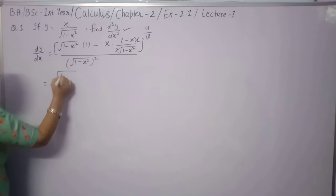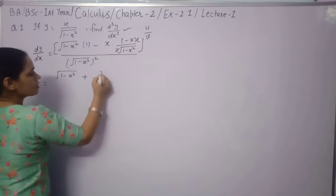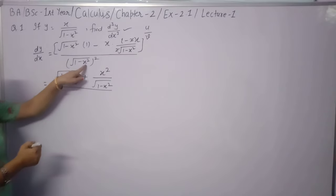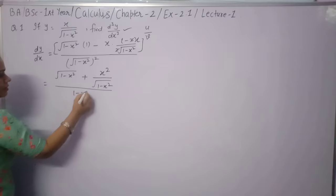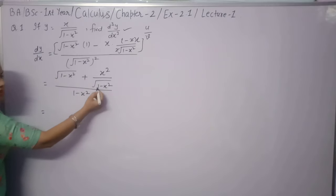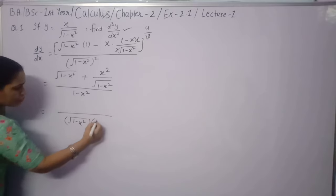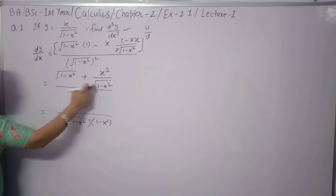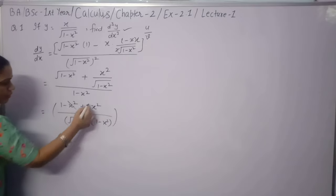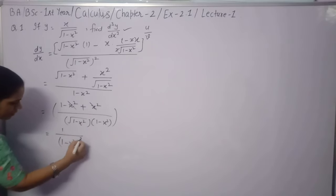Solving further: √(1-x²) × 1 minus x × [x/√(1-x²)], all over (1-x²). The square and square root cancel, giving us (1-x²) plus x² in the numerator. After x² cancels, we get 1 upon (1-x²)^(3/2) as the first derivative.